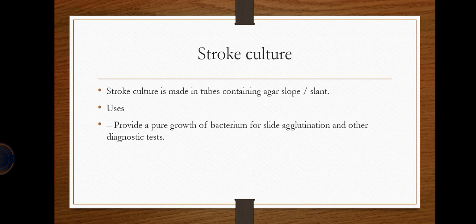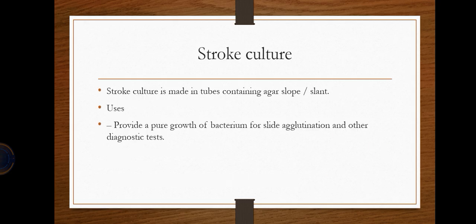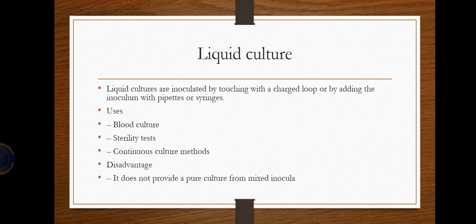Stroke culture involves making a slant or agar slope at an angle. It is done to provide pure growth of bacteria for subculture and other diagnostic tests.